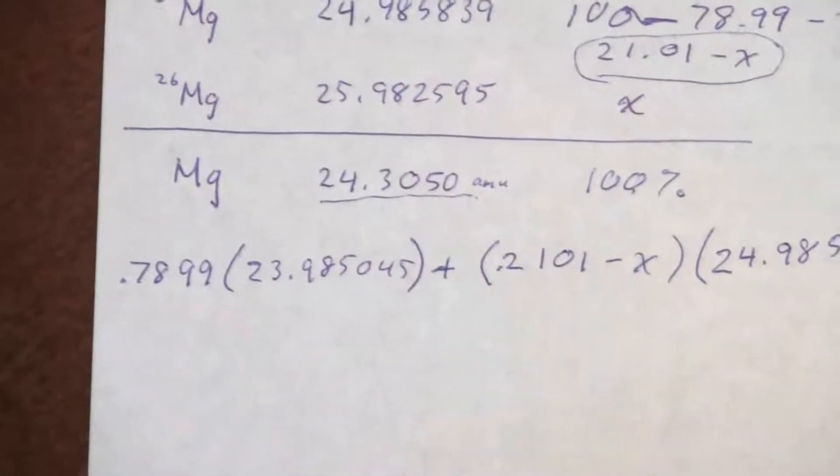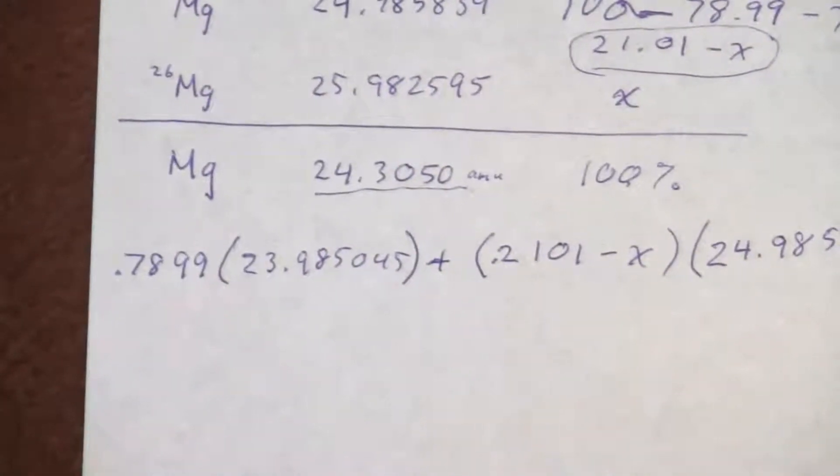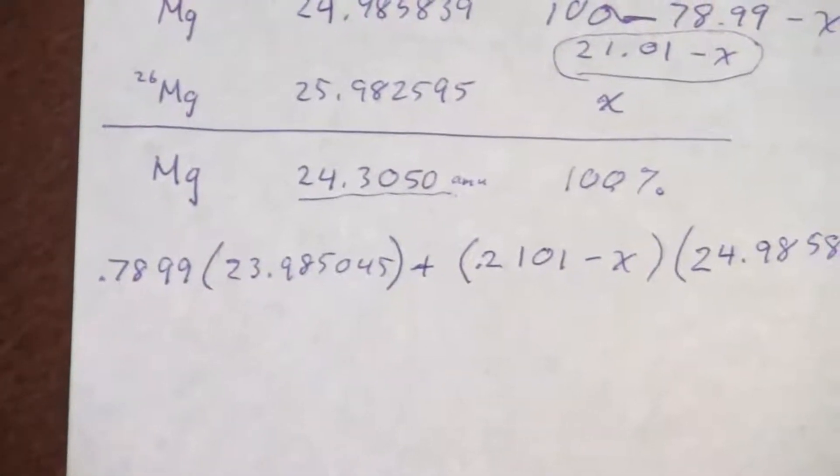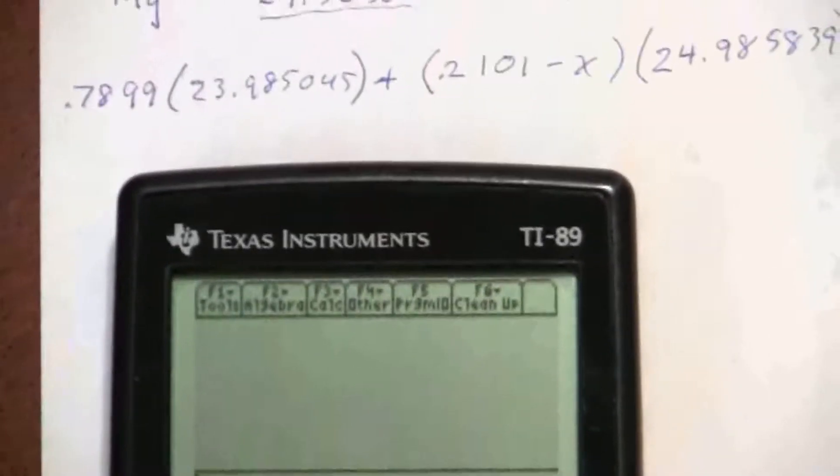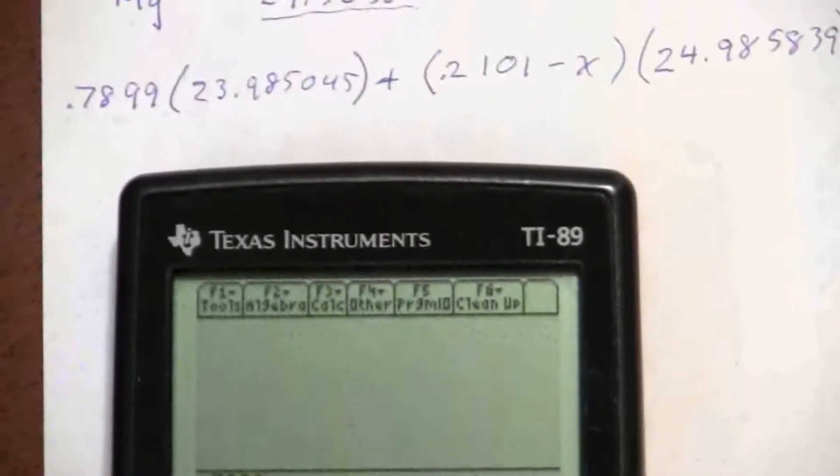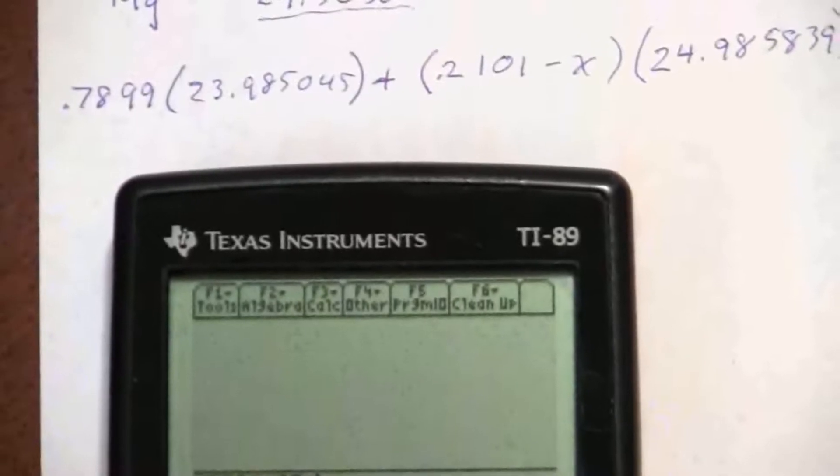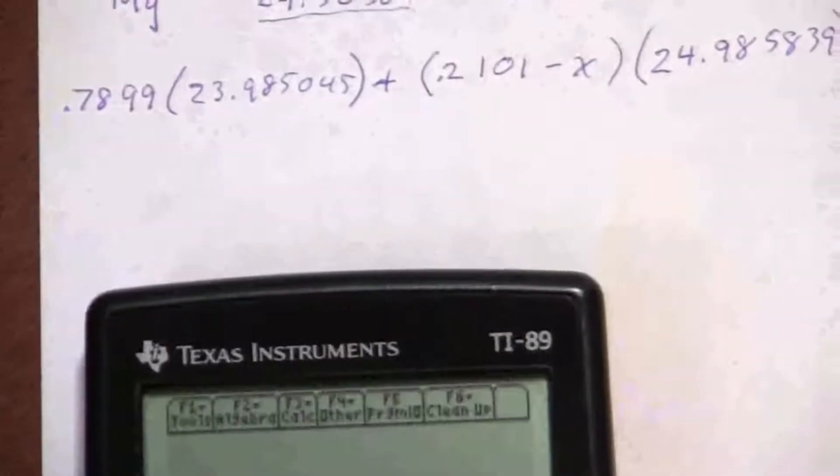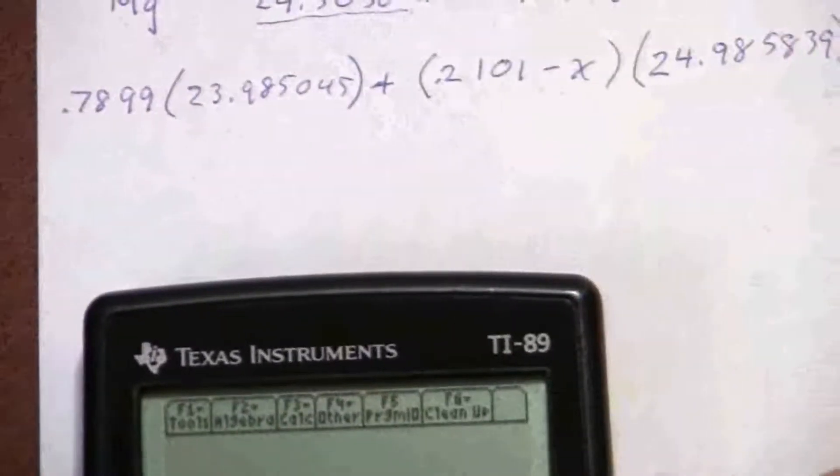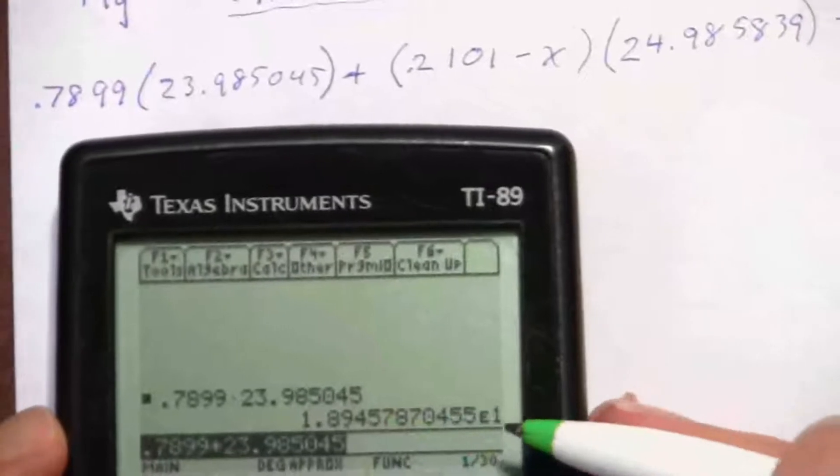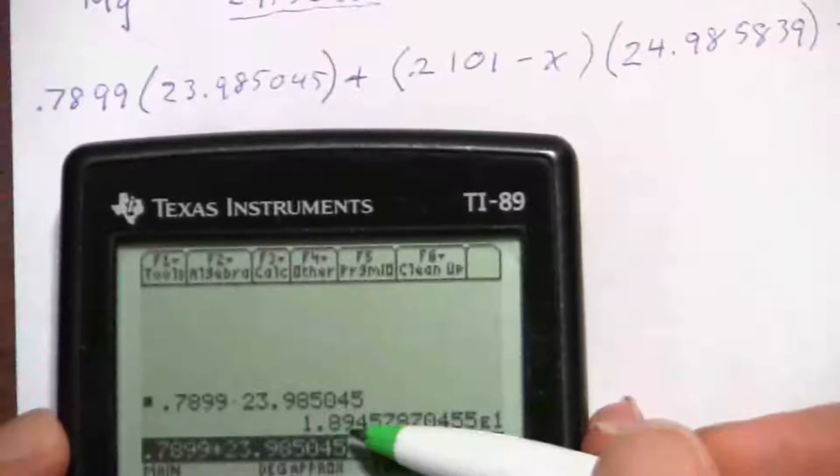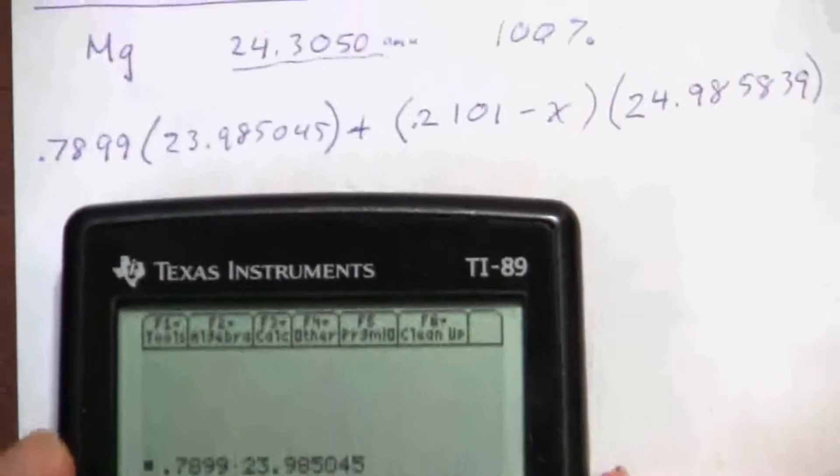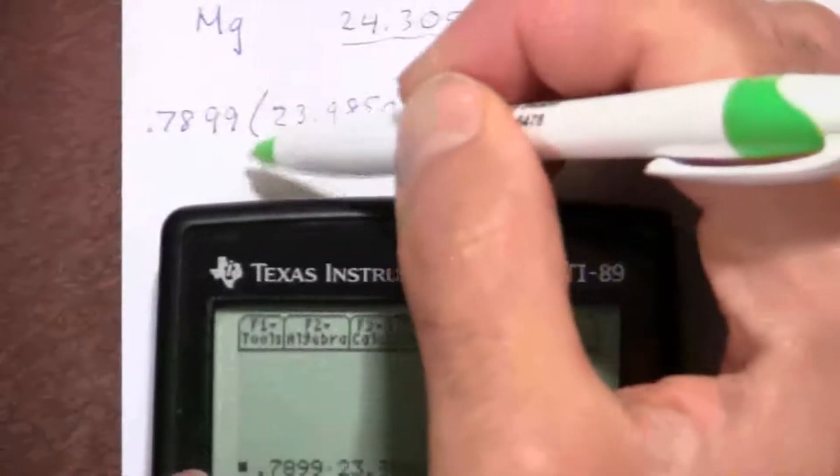Okay, so let's do these products. I have 0.7899 times 23.985045, and this one gives me on my calculator in scientific notation times 10 to the 1. That means this is actually 18.94. Now I don't need to write all of this out.